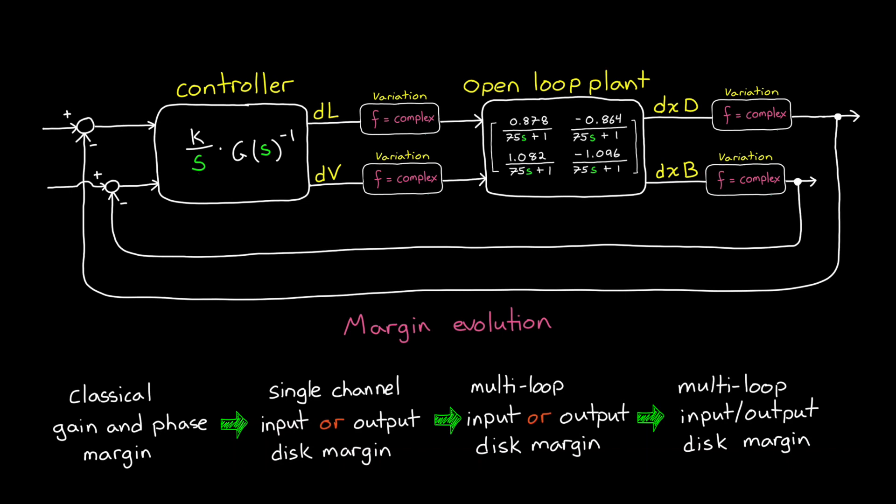And which one you want to look at depends on where your uncertainty lies. For example, if you're certain that your inputs will be exactly what you command, then you may only need to look at multi-loop output disk margin, since that's only where your uncertainty is.